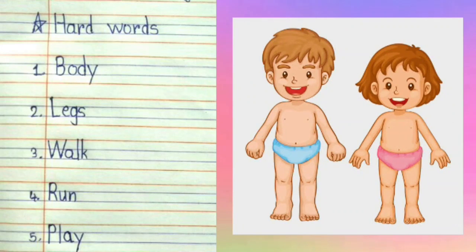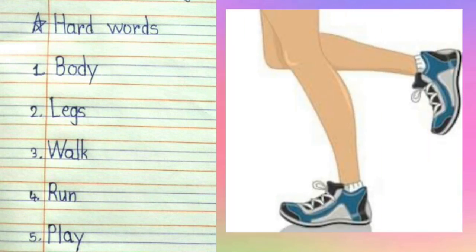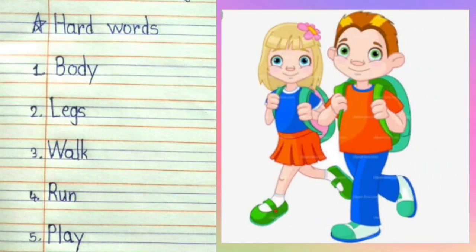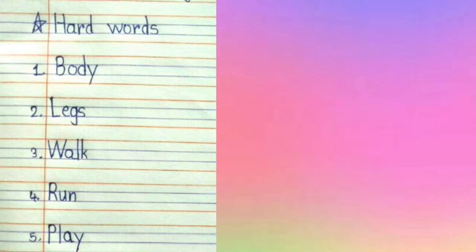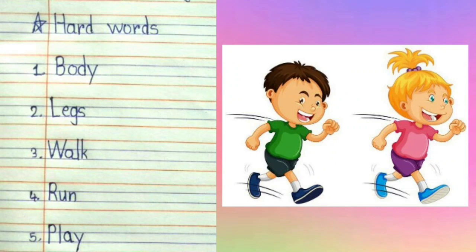First one is body. B-O-D-Y. Body, yaani ki, shariar. Second number is legs. L-E-G-S. Legs, yaani ki, pair. Third number is walk. W-A-L-K. Walk, yaani ki, chalna. Fourth number is run. R-U-N. Run, yaani ki, dodna.